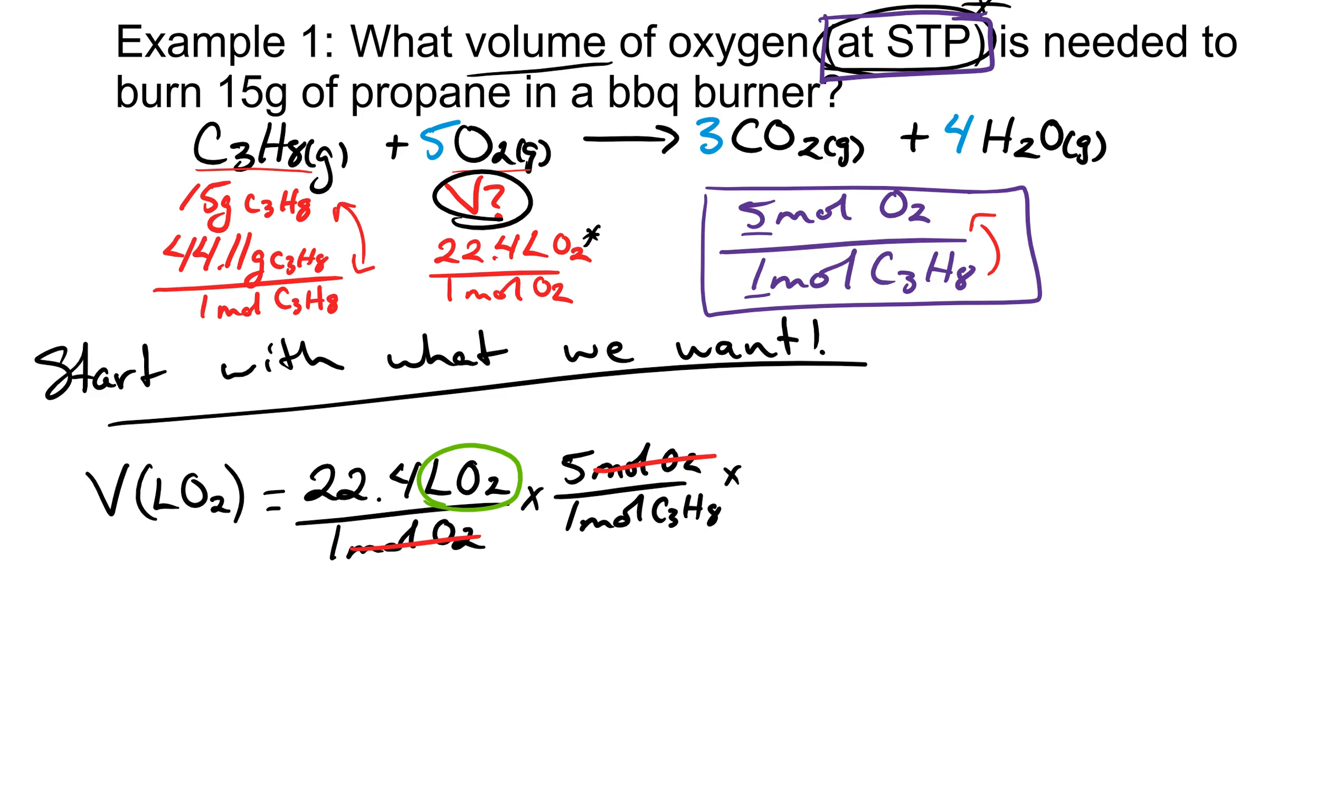Now we just need to cancel out moles of propane. Where else do I have moles of propane? I have moles of propane in the molar mass of propane. But I'm going to have to flip that unit conversion: one mole of C3H8 for every 44.1 grams of C3H8. Moles of C3H8 cancel out. So I still have my mass of propane. No problem. I know that we have 15 grams of C3H8. So grams of C3H8 cancel out.